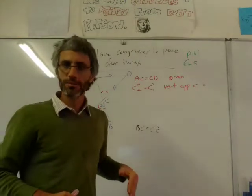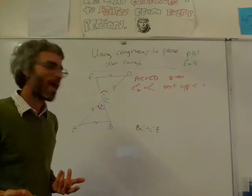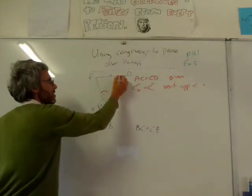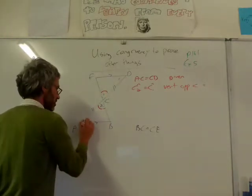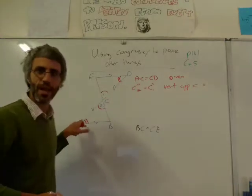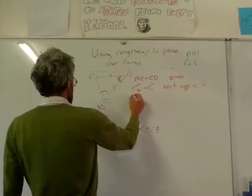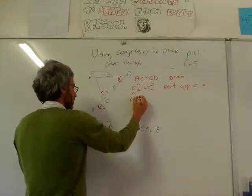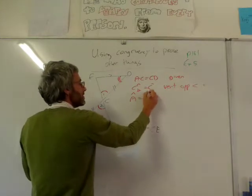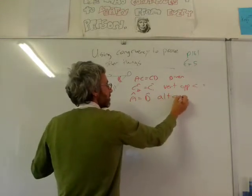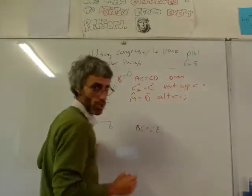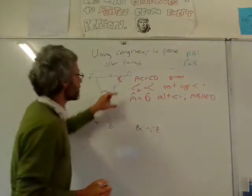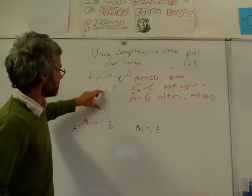So if they're parallel, then we can figure out that some angles are equal. This angle is going to be equal to that angle - what do we call these? Alternating angles. So I can say, starting from the bottom triangle: angle A is equal to angle D, and these are alternating angles. I need to write down which lines are parallel: AB parallel to EB. And now I've got two angles and a side, so I can write down congruency.